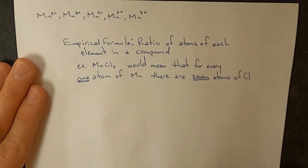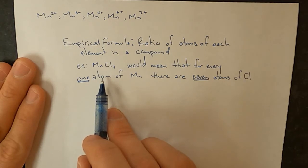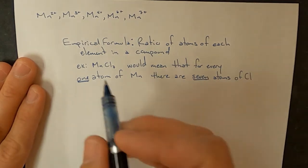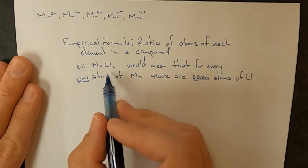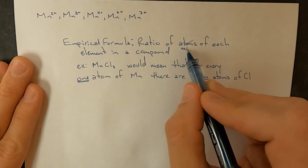But instead we know that the number of atoms in a sample can be described by how many moles of that sample or that element. So we can cross the word atom off in this definition and replace it with the word mole.